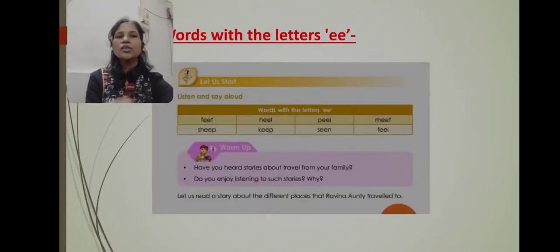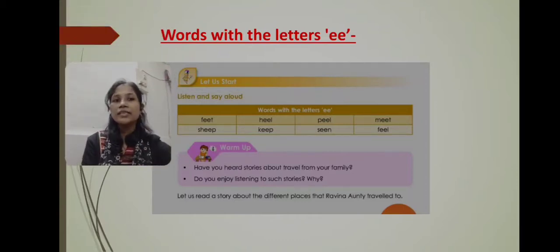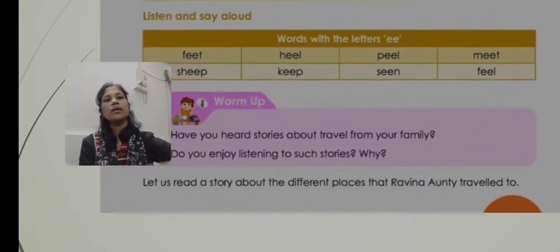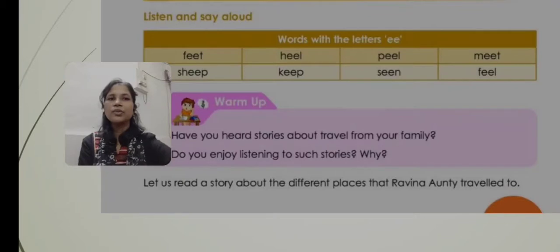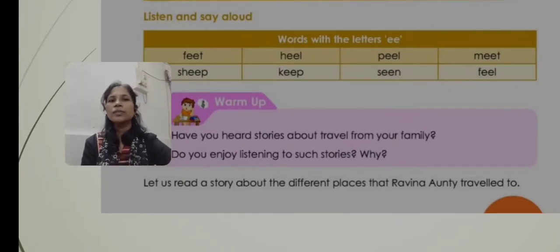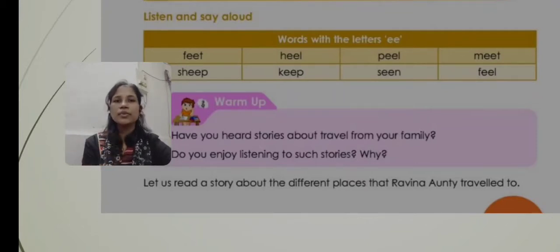Before that, let us discuss a few words with the double-E sound. Whenever we write some words with double-E, the pronunciation becomes long. For example, in 'listen and say aloud': feet — F-double E-T — 'feet'. If only a single E is there, we just pronounce 'E', but here there are two E's, so it becomes 'feet'.